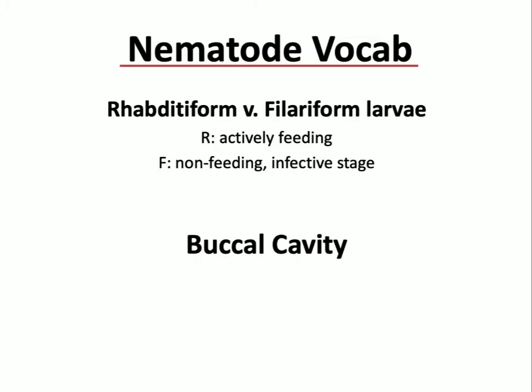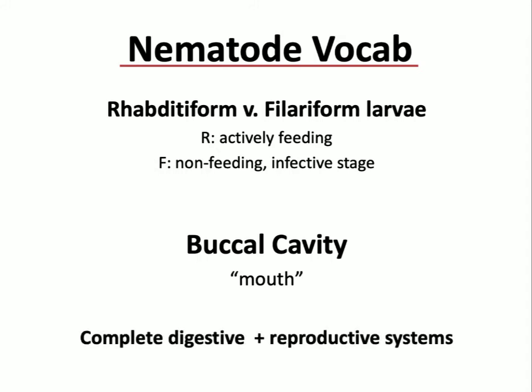Because nematodes are roundworms with a developed digestive system, they actually have mouths. We did not see mouths in the cestodes or trematodes because they had sucking discs — but those discs were just for attachment, not for eating. Nematodes have what's called a buccal cavity, which is the mouth, and that's going to be important for diagnostic purposes in some species. They have complete digestive and reproductive systems, whereas flatworms just absorbed things through their integument — so this is a step up in evolution.